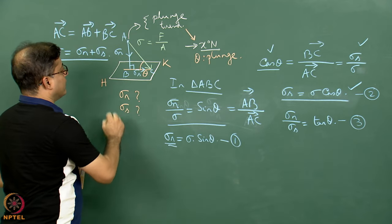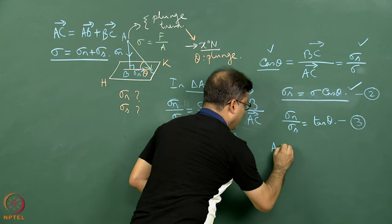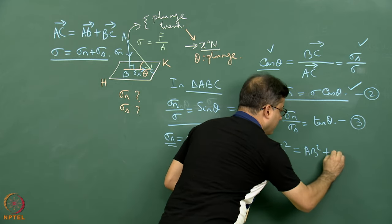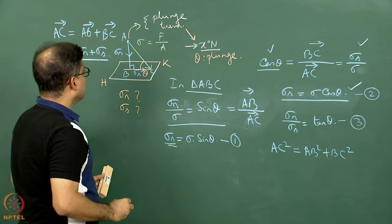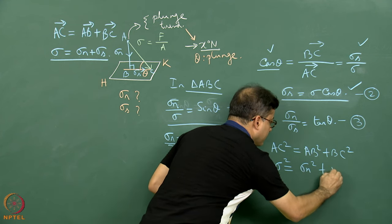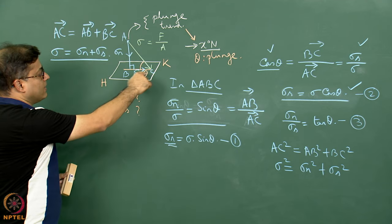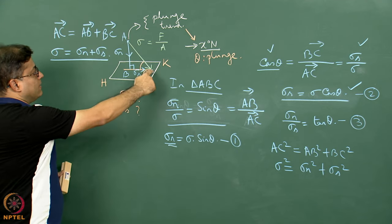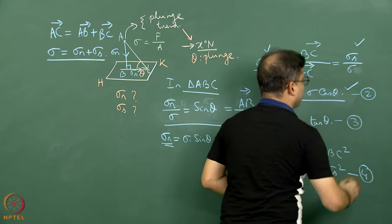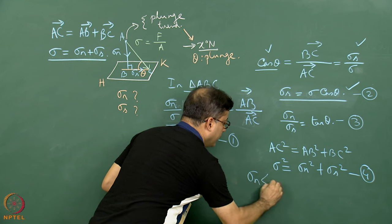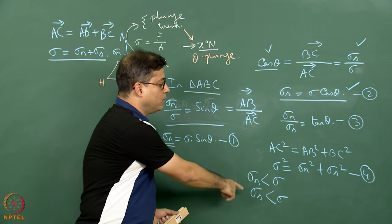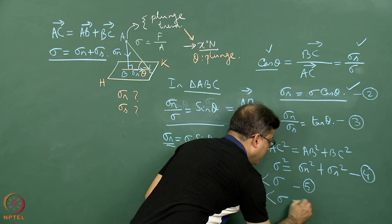From this right-angle triangle I can also write that AC² equals AB² plus BC². So from here we can write sigma² equals sigma_n² plus sigma_s². Also, from the right-angle triangle we can see that AC is bigger than AB and AC is bigger than BC. That means sigma_n must be less than sigma and sigma_s must be less than sigma. These are two inequalities — I can write them as number 5 and number 6.